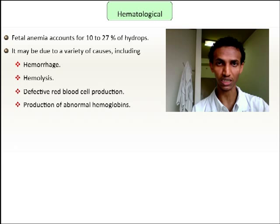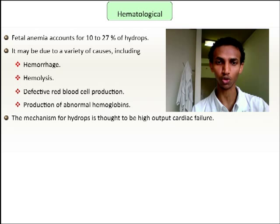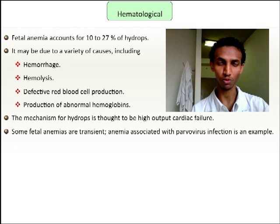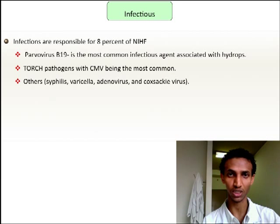The hematological category accounts for approximately 20% of hydrops fetalis cases and includes hemolysis, defective red cell production, or abnormality in hemoglobin production. The mechanism is thought to involve high output cardiac failure. Some fetal anemias are transient — for example, anemia associated with parvovirus infection. When a woman has a parvovirus infection, the anemia is transient and the fetus may recover spontaneously. Surveillance is warranted in such cases, and intrauterine blood transfusion is an option if necessary.